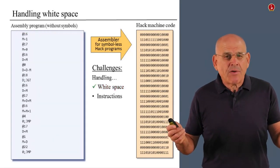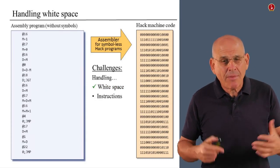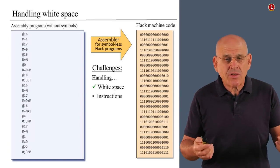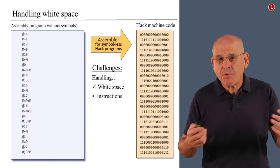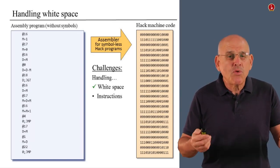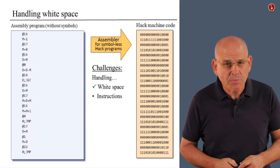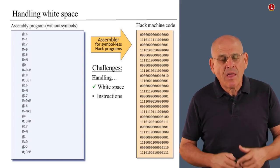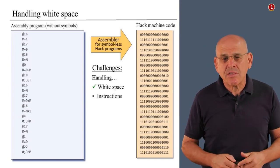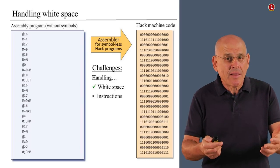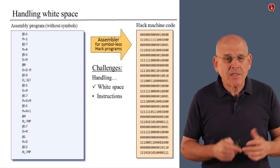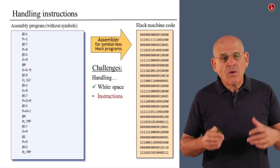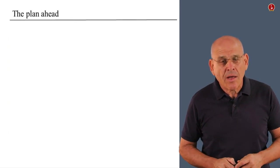What remains after we eliminated the white space is only instructions. So the challenge is reduced to translating programs that have pure instructions, so to speak. This is a sequence or a stream of A instructions and C instructions. In order to translate them, we have to know how to translate these instructions into binary code. And that's exactly what we're going to do in the next unit.